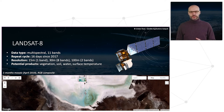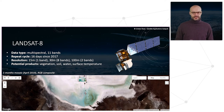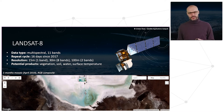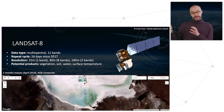Landsat 8 is a multispectral mission with 11 bands and a repeat cycle of 16 days since 2017. The spatial resolution depends on the bands and varies from 15 meters for the panchromatic band, to 30 meters, to 100 meters.